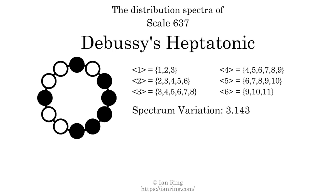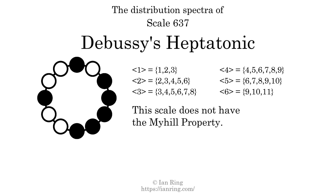Since the variation is greater than zero, this indicates that the scale is not perfectly even. The highest spectrum width is 5, and since this is greater than 1, we know that this scale is not maximally even. If every spectrum has exactly two specific intervals, we call that the Myhill property. This scale does not have the Myhill property. Since the generic interval ranges overlap, this scale is an improper scale.